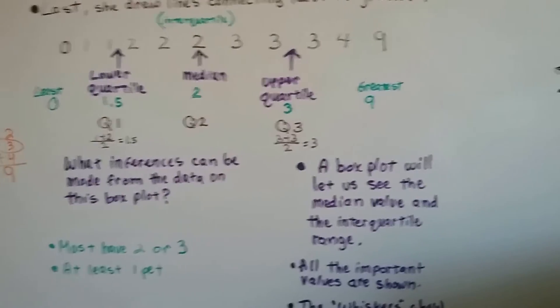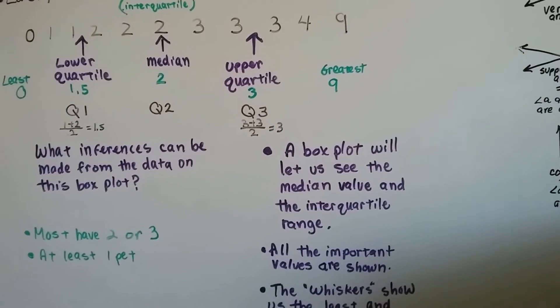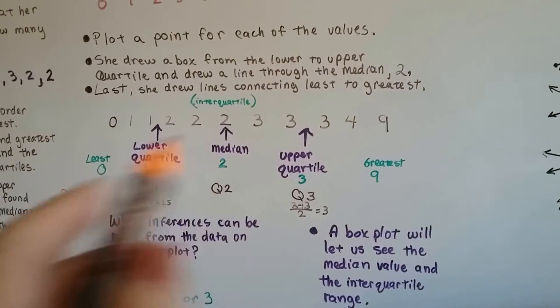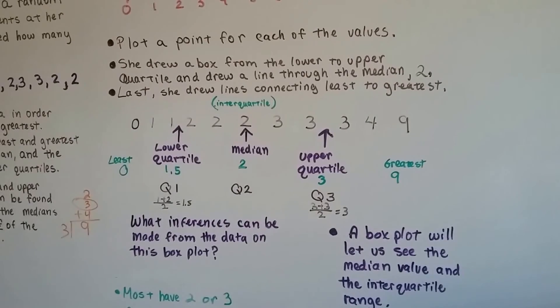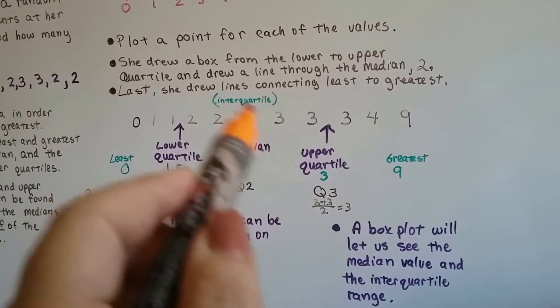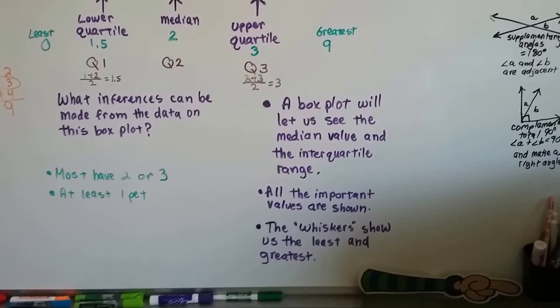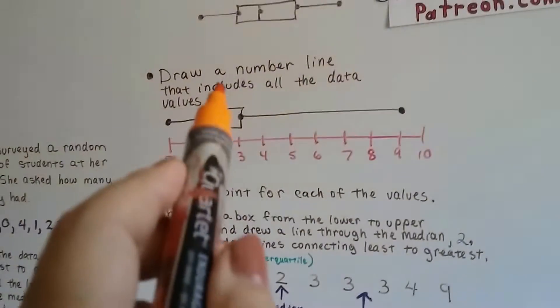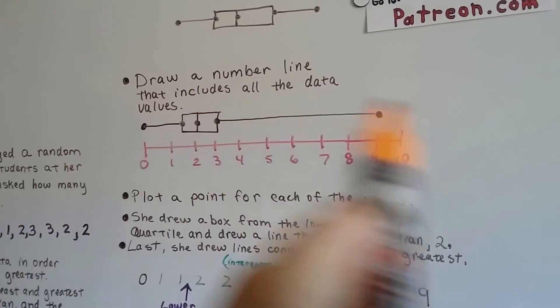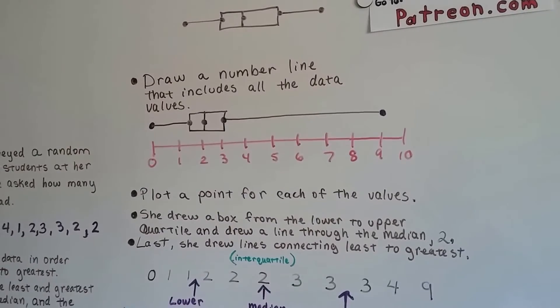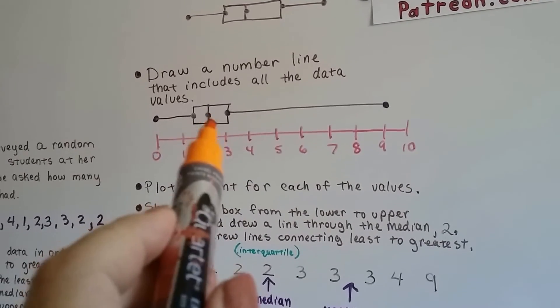A box plot, or box and whisker plot, will let us see the median value in the interquartile range, where the dot plot from the last video wouldn't. So we can right away see what the median is. All the important values are shown. The least, the greatest, where the lower quartile starts, where the median is, where the upper quartile starts. It's all the important information.